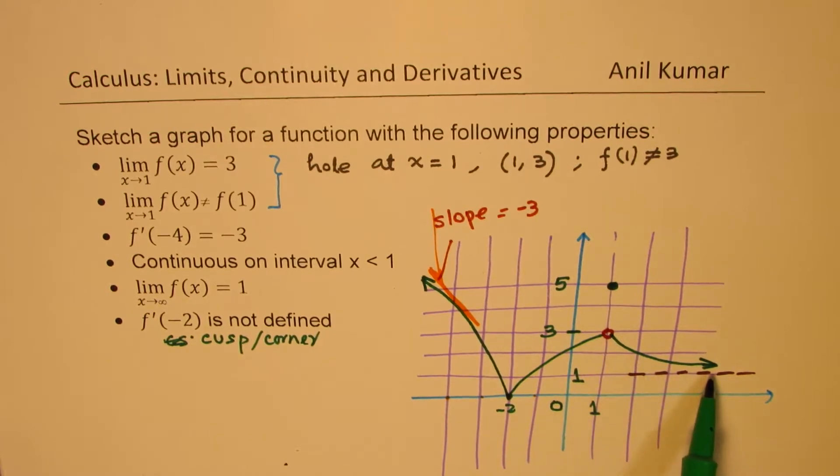And as x approaches positive infinity, the function approaches 1. At minus 2, cusp, that means the derivative is not defined.